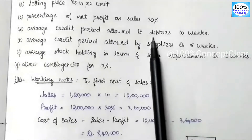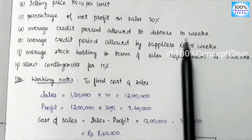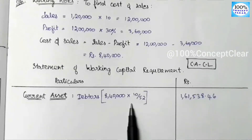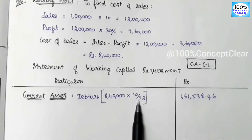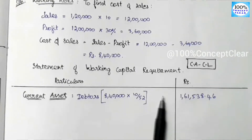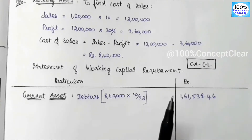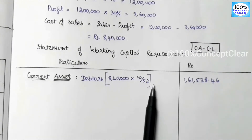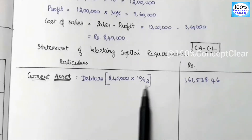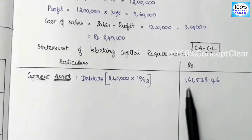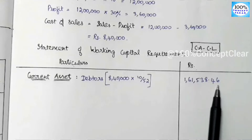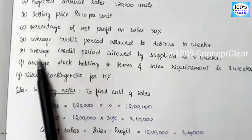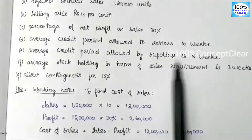Why 10 divided by 52? We have a credit period of 10 weeks, and there are 52 weeks in a year. So we use 10 over 52. Calculating 8,40,000 into 10 by 52 gives us Rs. 1,61,538.46. Next, the average credit period allowed by suppliers is 5 weeks.